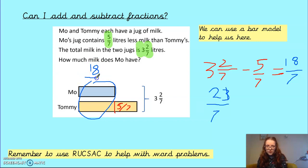What do you notice about the bit here between Moe and Tommy? They're identical, right? So, if I take this and divide it by 2, if I make sure that I share it out equally between them, I know that I'm going to find out how much milk Moe has. So 18 divided by 2, nice and simple, that's going to be 9. So Moe has 9 7ths.